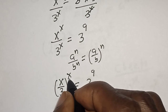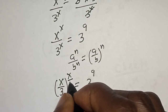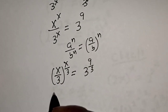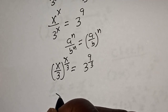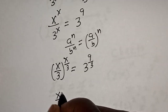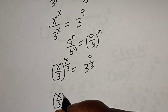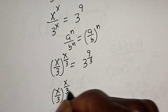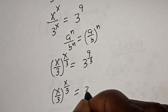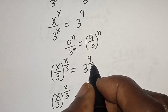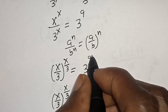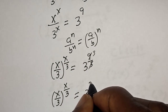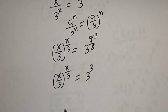Now let's rewrite the right side: dividing the exponent, 9 divided by 3 gives 3, so S over 3, all to the power of S over 3, is equal to 3 to the power of 3.